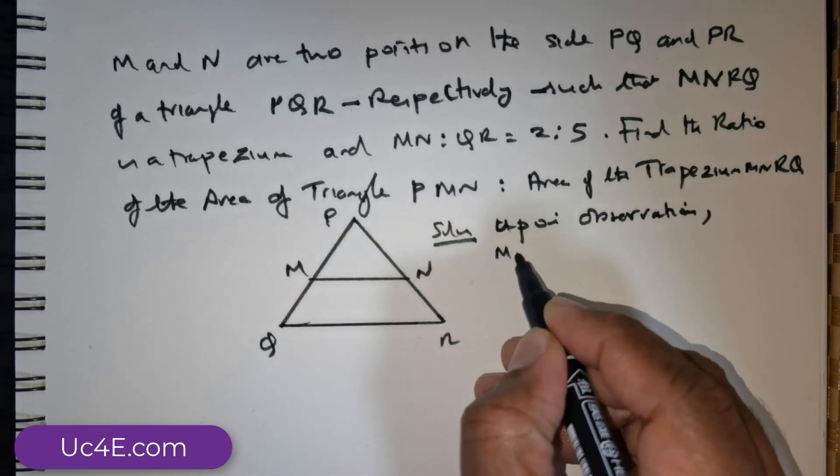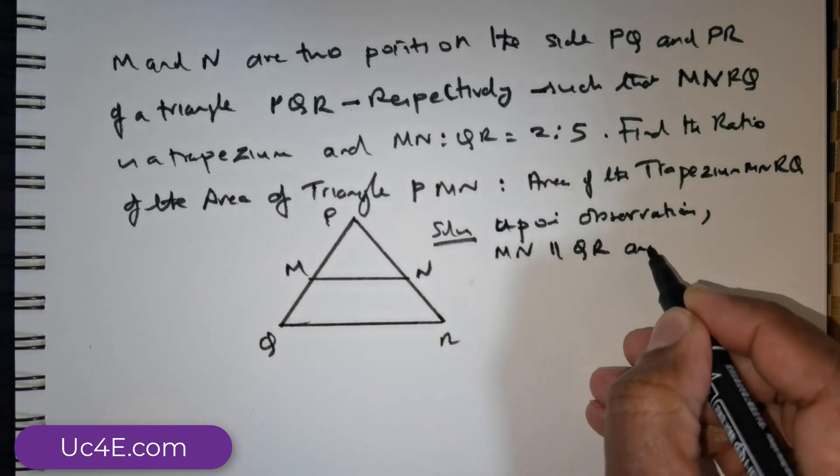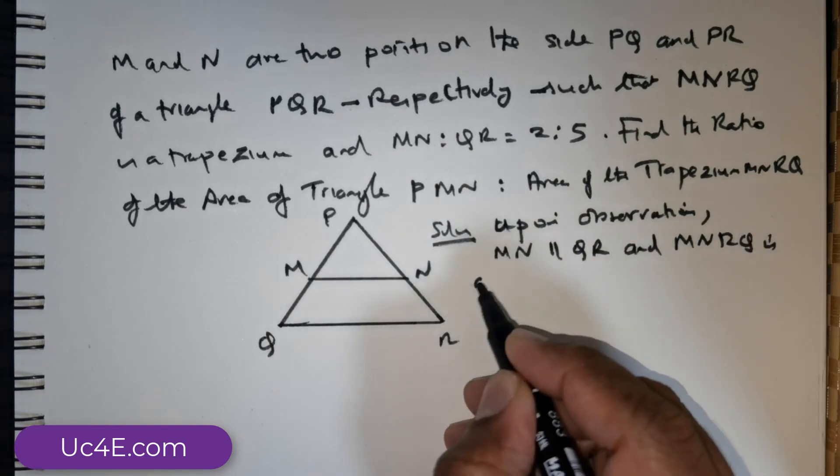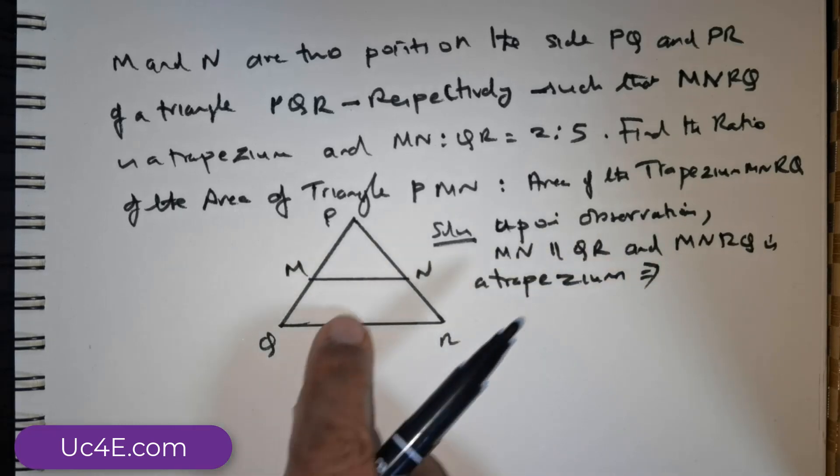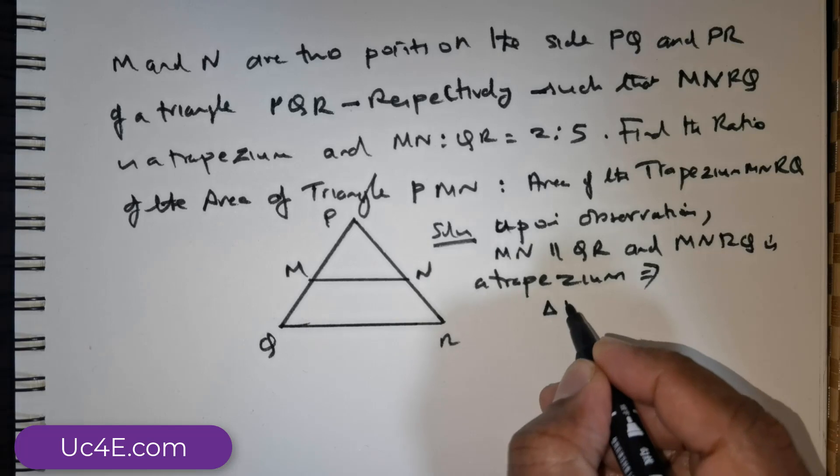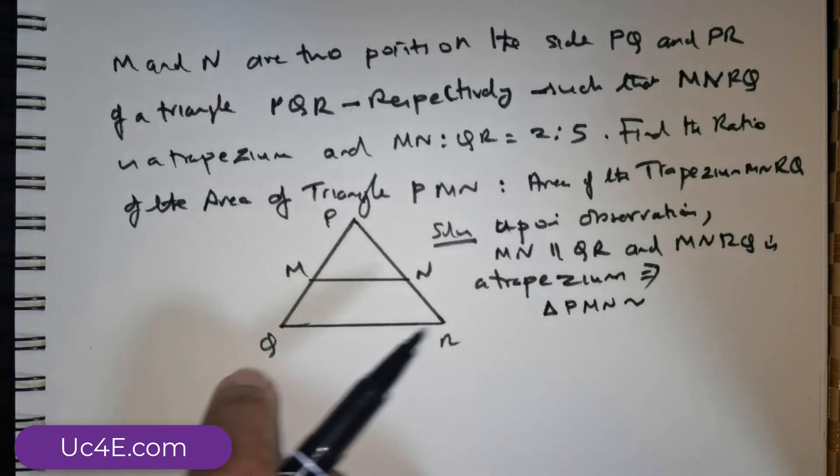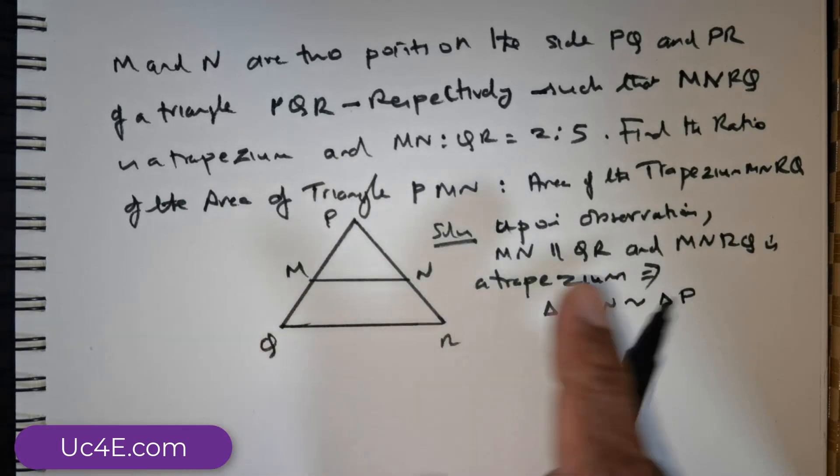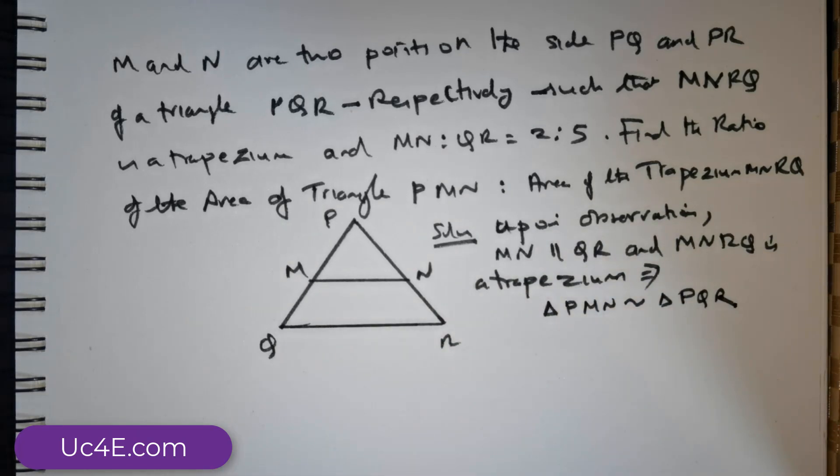We see that MN is parallel to QR and MNRQ is a trapezium. So this would mean triangle PMN is similar to triangle PQR. So that's an important observation that we will have to make.